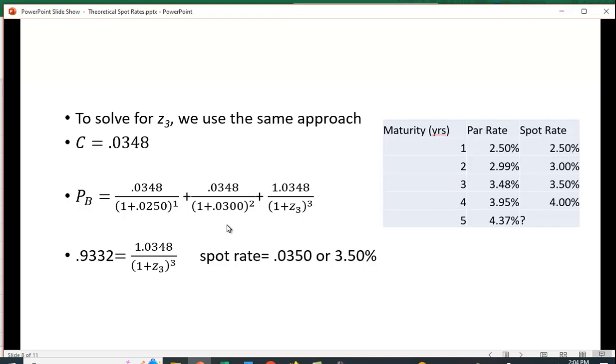I'm going to dispense with all that algebra. I'm going to take these two present values, subtract them from 1 to bring them over to the left-hand side of the equation, multiply both sides by this, divide this by this side, and then take the cube root. I should get 0.0350, or 3.5%, which is in fact what I get here.